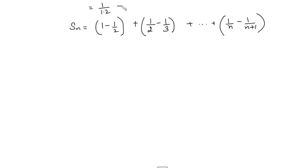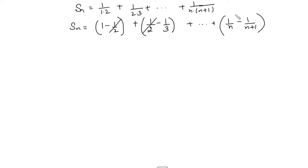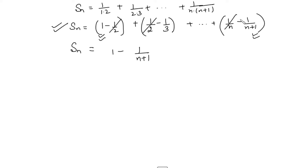Writing all terms this way, the inside terms cancel out and you are left with only the first and the last term. Such a series is called a telescoping series — when you find the sum of the first n terms, intermediate terms cancel and you are left with the first and last. Then you find the limit of Sn.